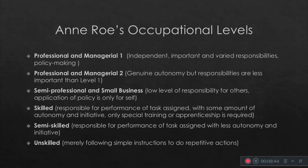Next would be Ann Roe's occupational levels. First would be professional and managerial level one — they are independent, important, and they have responsibilities, and they focus on policy making.